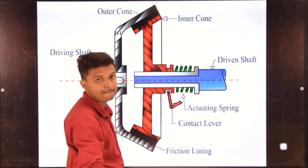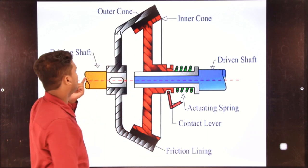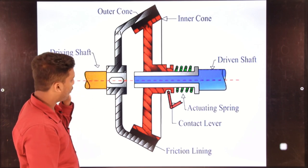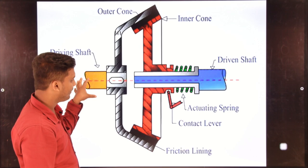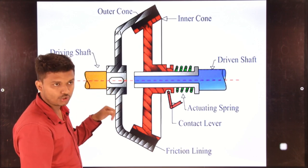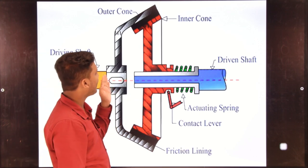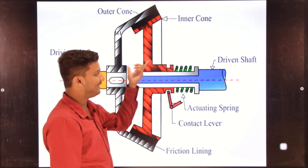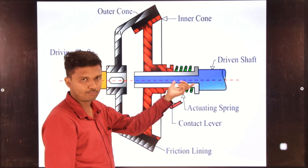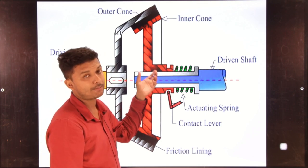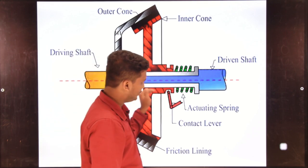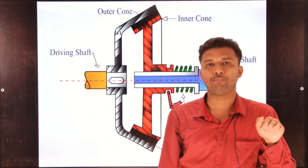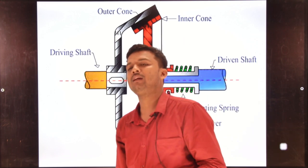When the inner cone moves towards the outer cone, the spline shaft of the inner cone gets connected with the driving shaft of the outer cone. The torque is now transmitted to the driven shaft from the engine or input shaft through the outer cone during engagement. From the outer cone, torque is transmitted to the inner cone by means of the spline shaft, then to the gearbox, propeller shaft, differential, and rear axle.